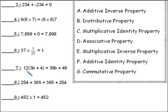In number 7, what we're doing here is we're distributing the 12 to both terms. We're taking 12 times 3, and we get 36B. 12 times 4, and we get 48. This is called the distributive property, letter B.